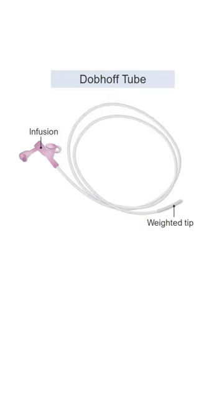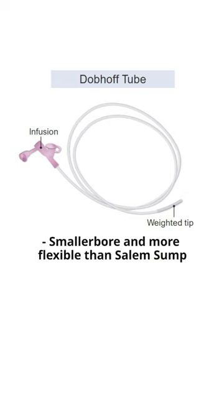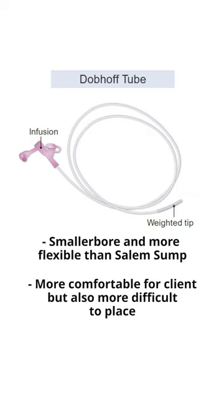Now let's take a closer look at the Dobhoff tube. This one is much smaller in circumference and way more flexible than the Salem sump tube. When we talk about placement, as a nurse this one is way more difficult to place because it's very thin and a lot more flexible.